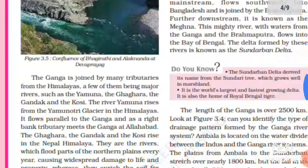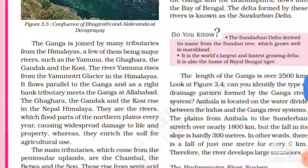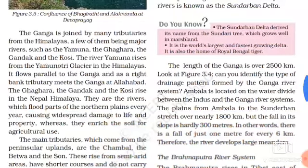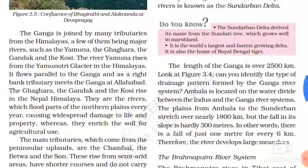These are the main tributaries of Ganga. To summarize again, the main tributaries are Yamuna, Ghagra, Gandak, and Kosi. The river Yamuna rises from the Yamunotri Glacier in the Himalayas.